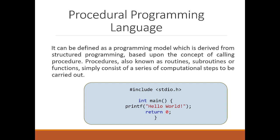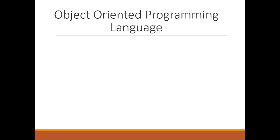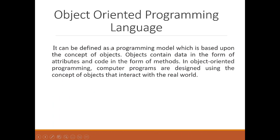In object-oriented programming, each and everything is based upon objects, whereas in procedural programming we use functions. Object-oriented programming represents real-world entities. It can be defined as a programming model based upon the concept of objects, where objects contain data in the form of attributes and code in the form of methods.